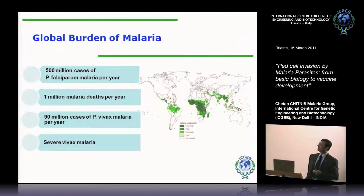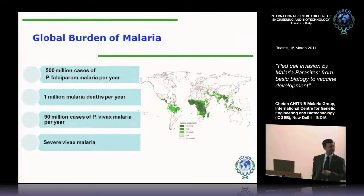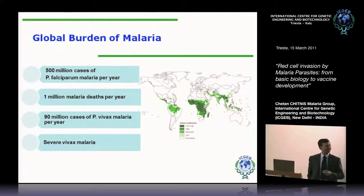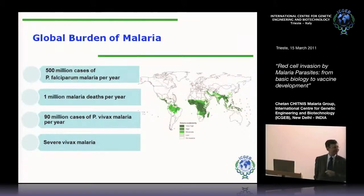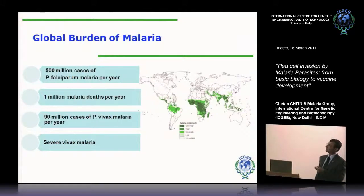This shows you the map of where malaria is a problem, and when I was looking at this preparing to come here to ICGB Trieste, I realized there is a significant overlap between this map and the map of ICGB member states. So I think it's fitting that we have a malaria program at ICGB. Italy is not shaded in green, but if ICGB had started in the middle of last century, even Italy would be green because there was malaria here. Malaria was eradicated from Italy, Spain, and parts of southern Europe only in the middle of last century.